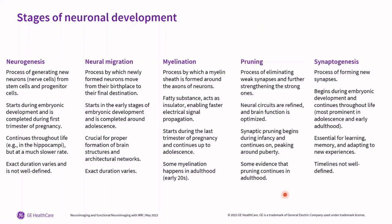Myelination is the process of developing the myelin sheath, which aids signal propagation. Then there's pruning: if a person is very good at maths but doesn't engage with language or music, the brain realizes some portions are not as useful as others. It steadily refines the circuitry, eliminates weak synapses, and further strengthens the strong ones. The combination of neural migration and pruning essentially leads to what we call talent. And finally, synaptogenesis is the process of forming new synapses.